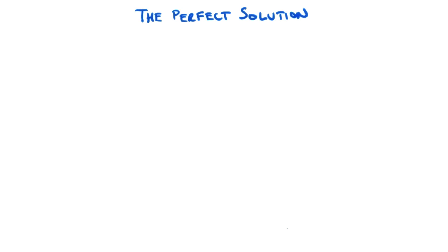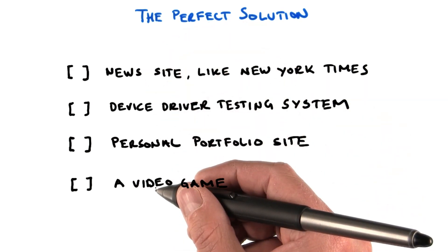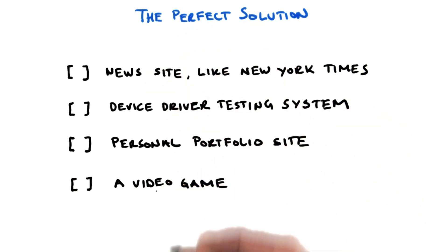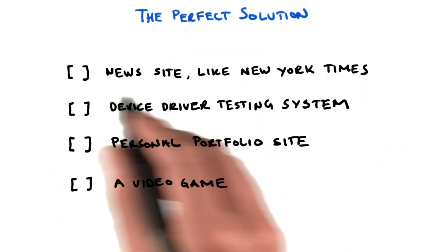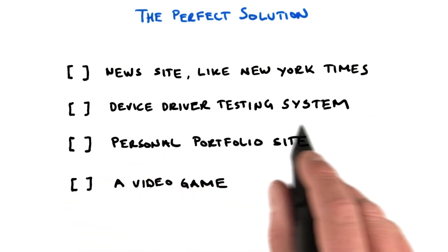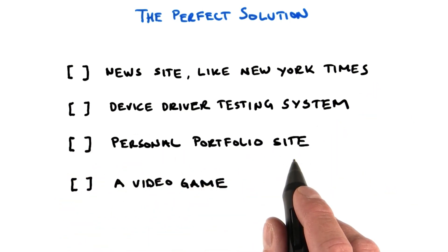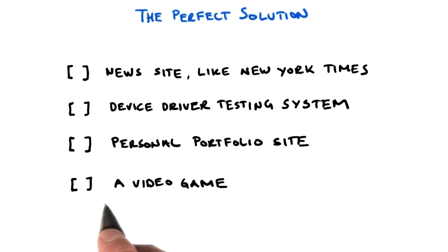Now, when you have been introduced to some of the benefits of App Engine, let's do a little quiz. For which of the following could App Engine be used and benefit from its strengths? A news site like New York Times, a device driver testing system, a personal portfolio site, or a video game. Check all that apply.